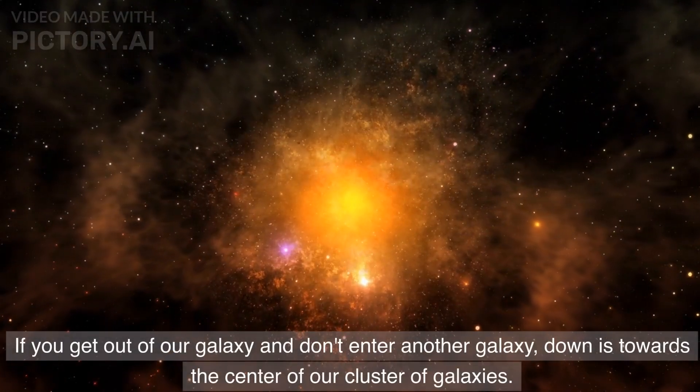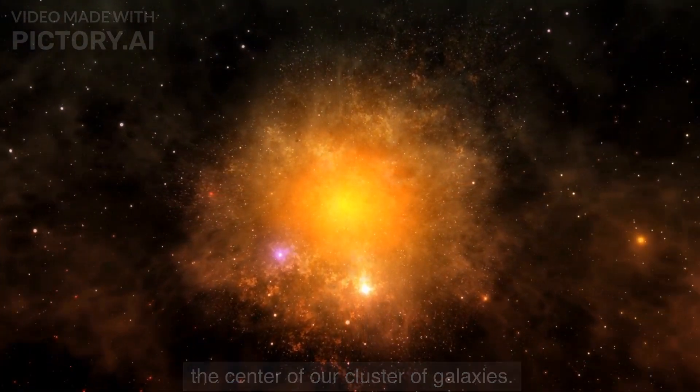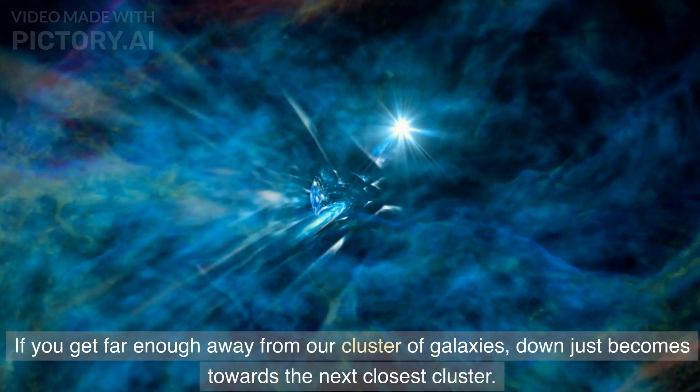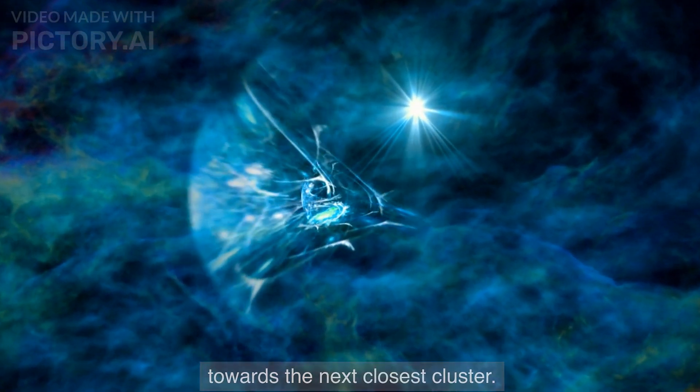If you get out of our galaxy and don't enter another galaxy, down is towards the center of our cluster of galaxies. If you get far enough away from our cluster of galaxies, down just becomes towards the next closest cluster.